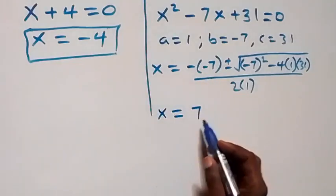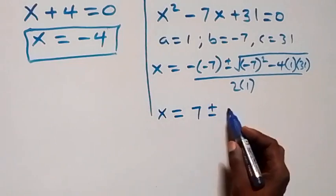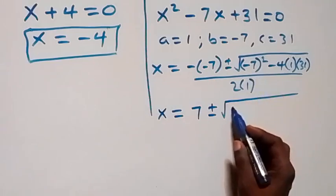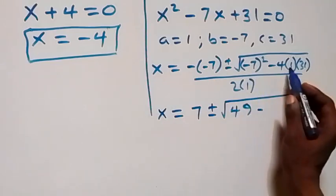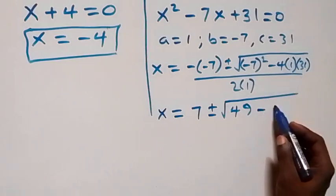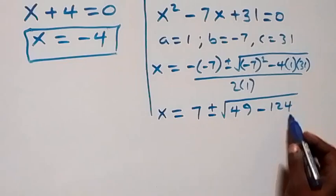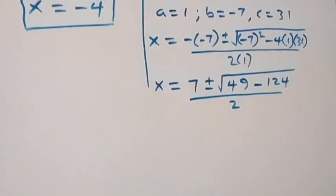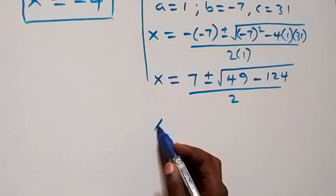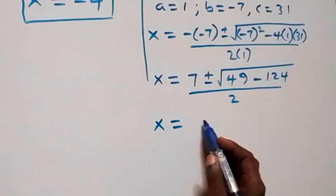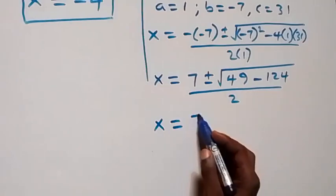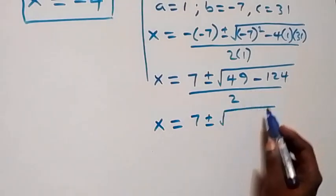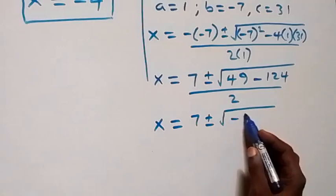Solving further: x equals 7 plus or minus square root of 49 minus 124, over 2. That gives x equals 7 plus or minus square root of minus 75, over 2.